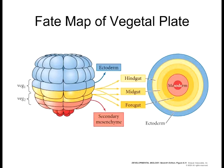Why is the vegetal pole mesoderm if it's supposed to be between ectoderm and endoderm? Invagination. Some of these cells are going to invaginate. The micromeres are actually going to ingress — they become disconnected, going from an epithelial to mesenchyme transition, moving inward toward the blastocoel. A lot of these will form what we call the skeletal rods, which are part of the skeletal system of the sea urchin.